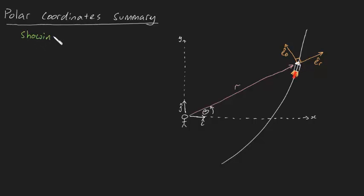If we wanted to show the velocity vector, it will have a component vr in the r direction and vtheta in the theta direction. This can be expressed mathematically as v is equal to r dot er plus r theta dot etheta.